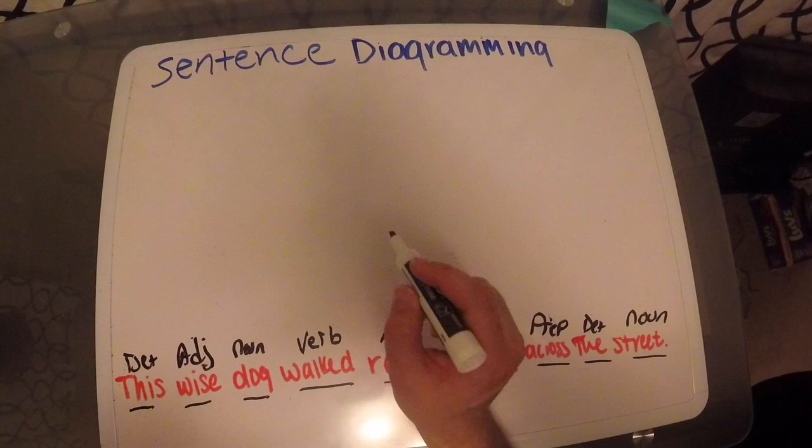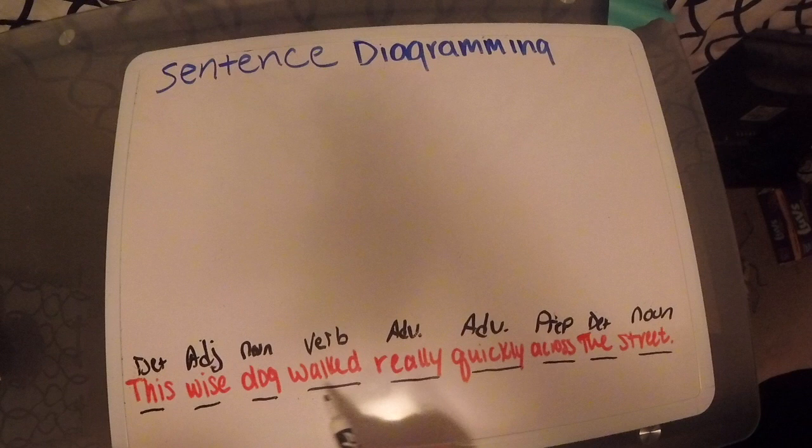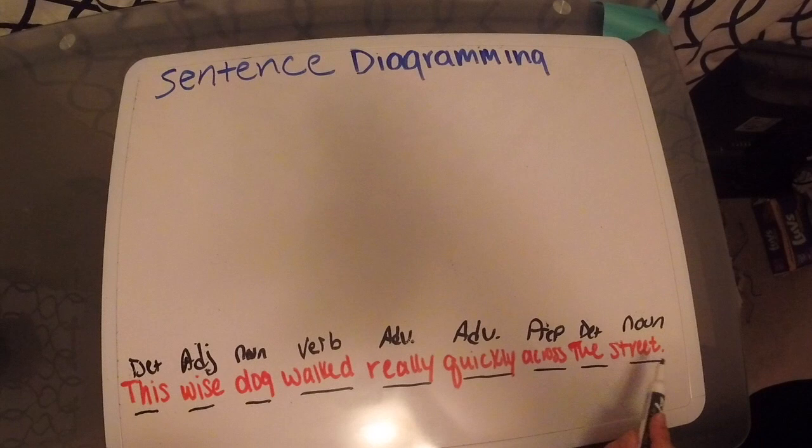Today we're going to diagram sentences. First thing you need to do is identify your sentence and each part of speech. This wise dog walked really quickly across the street.